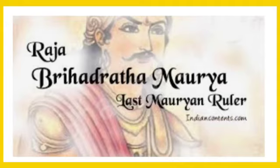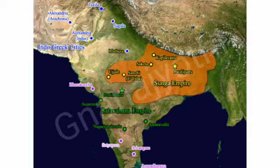The death of Ashoka in 232 BCE marked the beginning of the decline of the Mauryan empire. After Ashoka, his successors were weak and ineffective. The last Mauryan emperor, Brihadratha, was killed by Pushyamitra Shunga, the founder of the Shunga dynasty. This brought an end to the rule of one of the most glorious dynasties in the history of ancient India.